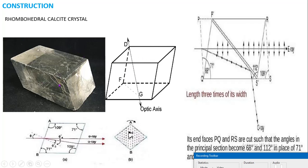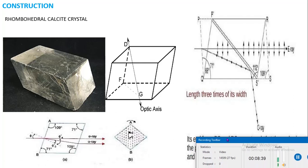Each calcite crystal consists of six parallelogram faces. A parallelogram face means the opposite angles are equal: angle A equals angle C, and angle B equals angle D. In this crystal, angle E is 109 degrees and angle B is 71 degrees, and angle D is also 71 degrees.